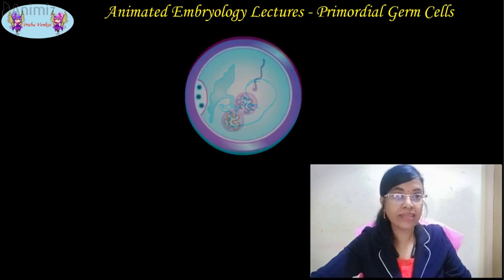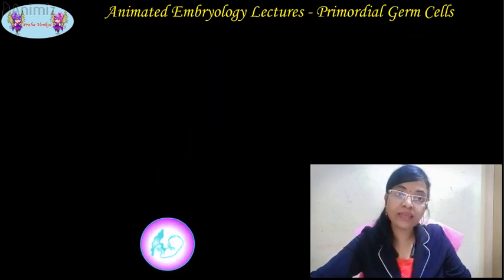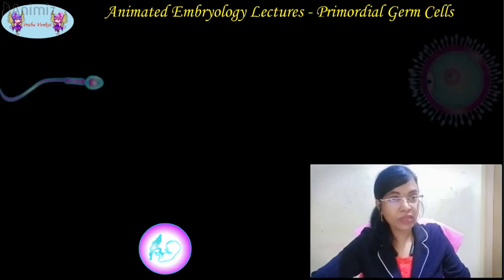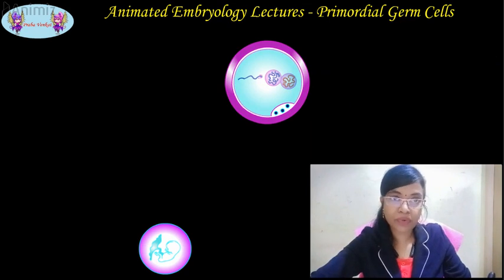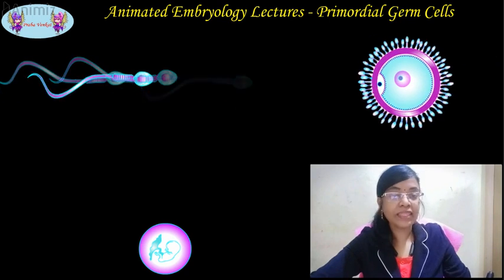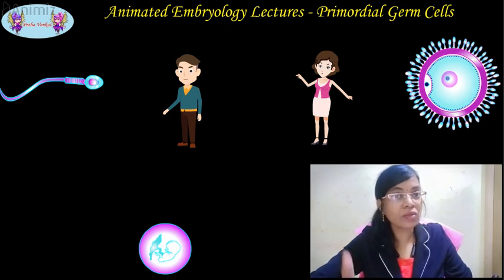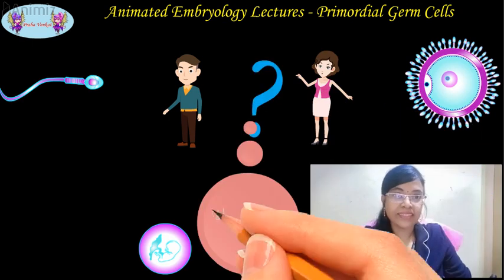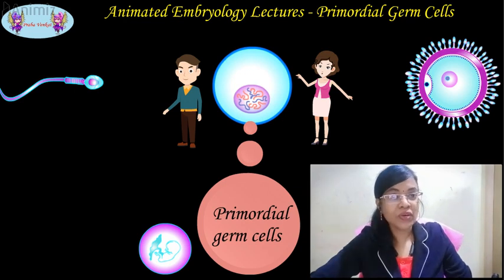Embryology deals with the amazing and complex phenomenon of development of a baby from a single cell — the zygote. Before entering into the complex developmental process, we must clarify certain important points. We all know that a sperm and an ovum unite to form a zygote. My question is: what is the origin of these two germ cells, the sperm and the ovum? The answer is the primordial germ cells, or PGC cells — the precursors for both the sperm and the ovum. So let's start embryology from the primordial germ cells.